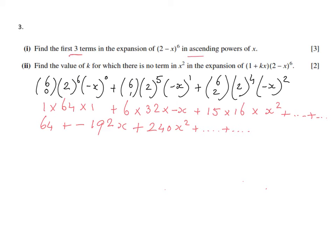Going to part (ii): find the value of k, a constant k, for which there is no term in x² in the expansion. I should realize that (2 - x)^6 is used again in some form on this side.